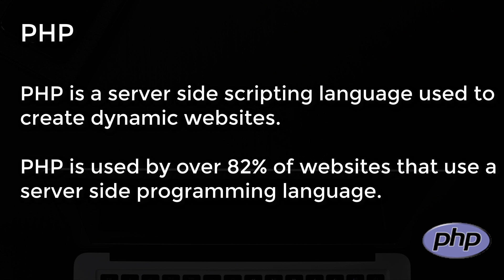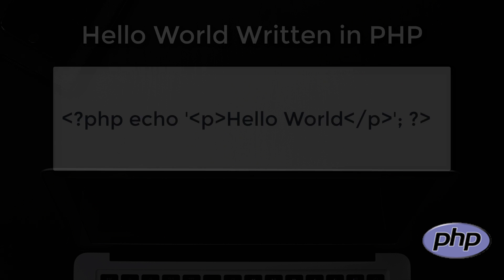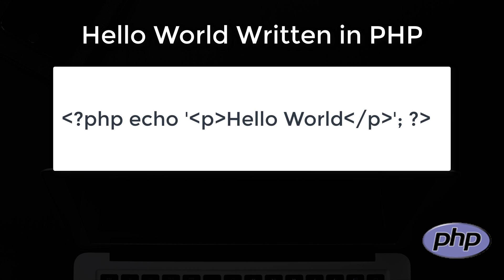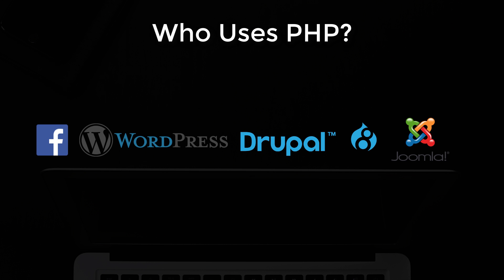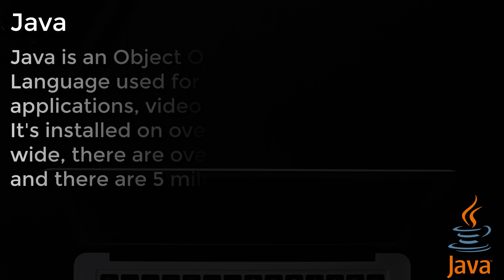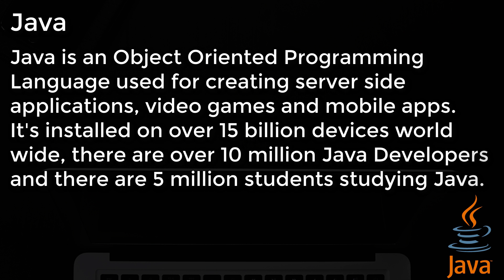Number 3: PHP. PHP is a server-side scripting language used to create dynamic websites. PHP is used by over 82% of websites that use a server-side programming language. This is how you write hello world in PHP. Companies that use PHP include Facebook, WordPress, Drupal, and Joomla, just to name a few.